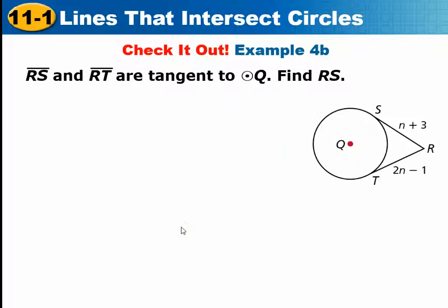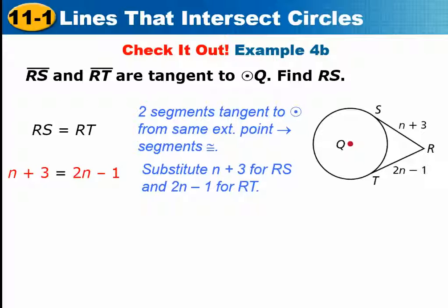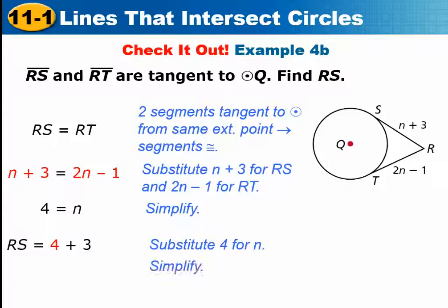This is another example. This is very similar to the first one we did. So try this one and then pause the video, try it, and then check your work. Okay, so on this one, you should have plugged in N plus 3 equals 2N minus 1. Continue solving, and you get 4 equals N. Plug it back in, and you will find that RS is equal to 7.